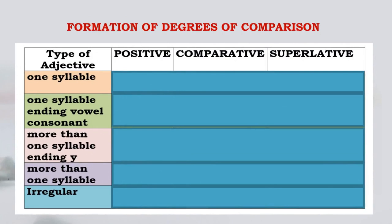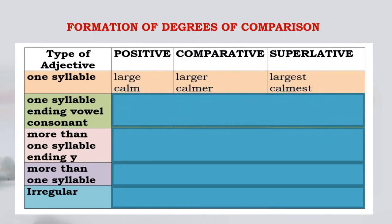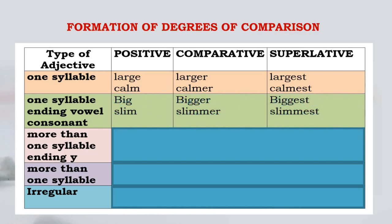Now let us see how the degrees are formed. Whenever there is one syllable, it becomes: 'large,' 'larger' — takes an '-r' — and 'largest' in the superlative. 'Calm,' 'calmer,' 'calmest.' But if there is one syllable ending with a vowel-consonant pattern, see 'big': 'I' is a vowel, 'G' is a consonant. So it becomes 'bigger' — the consonant doubles and '-er' is added. Don't write B-I-G-E-R; you put a double consonant and '-er,' preceded by a vowel. 'Slim' becomes 'slimmer' — M doubles — and 'slimmest.'